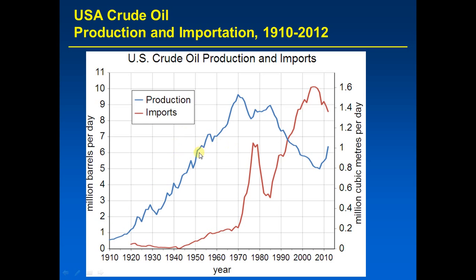There were little decreases maybe for a year or two before, but not for several years like this. There was a recovery, but then starting in the 80s, U.S. oil production continued to decline. As a result, imports went up. By the mid-2000s, the U.S. was importing over 10 million barrels of oil per day, which is more than our peak oil production of about 9.5 million barrels per day in 1970.